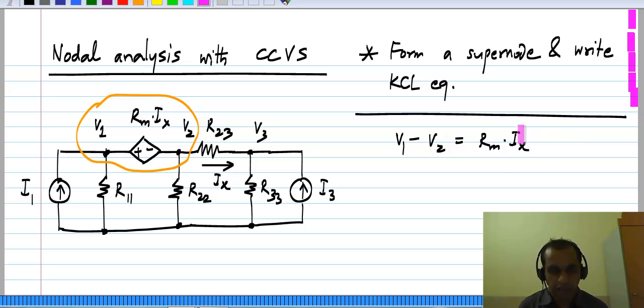Now I x itself is some unknown and I x is the current flowing through this resistor. We know that I x is V 2 minus V 3 divided by R 2 3 which of course is the same as V 2 minus V 3 times G 2 3.